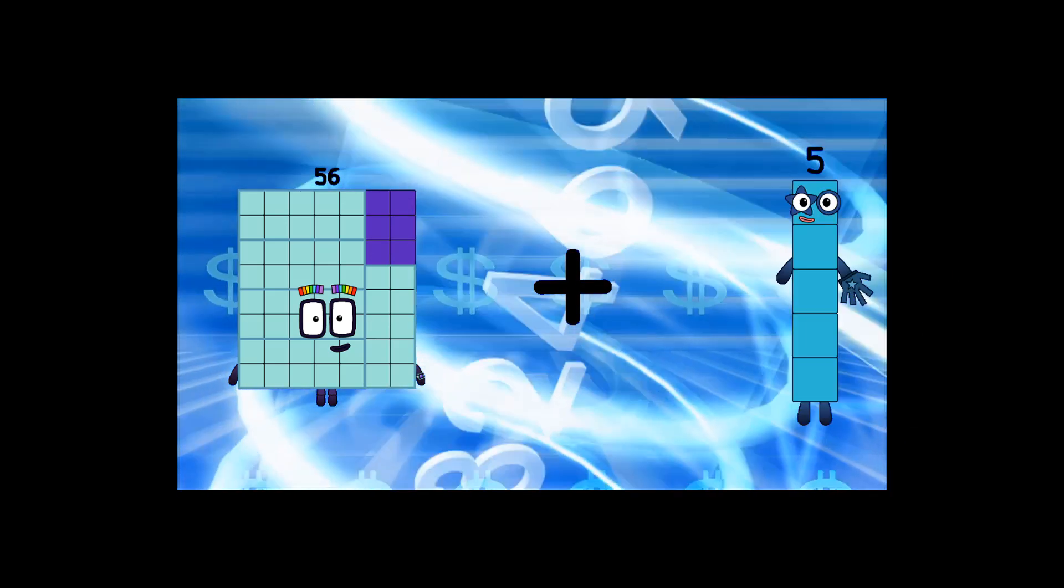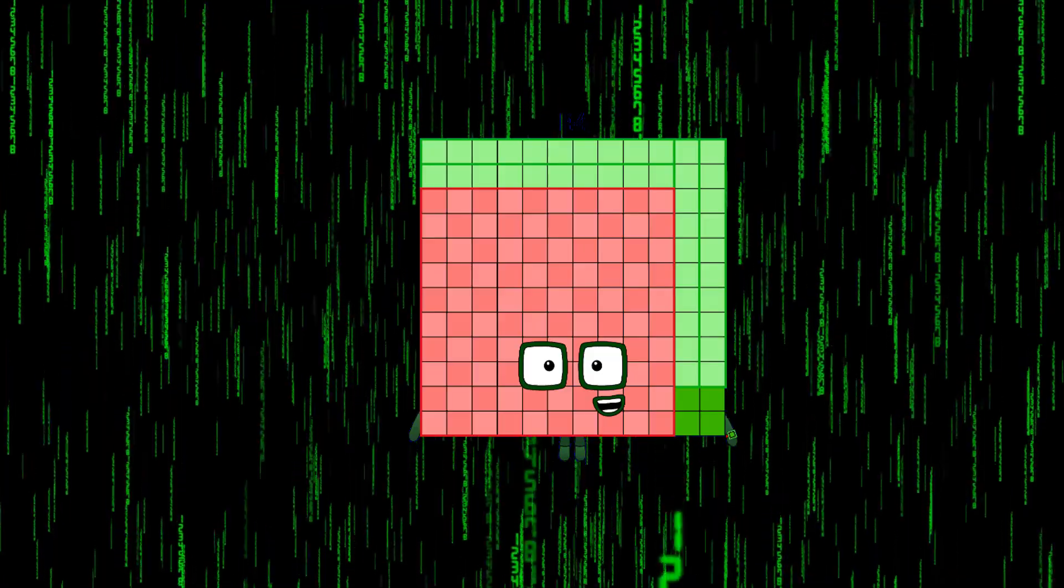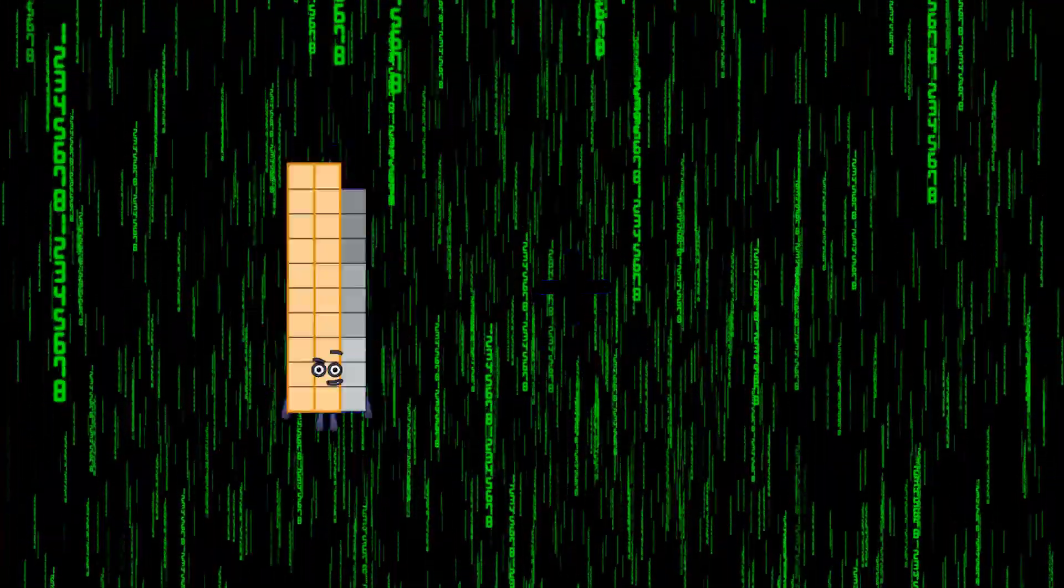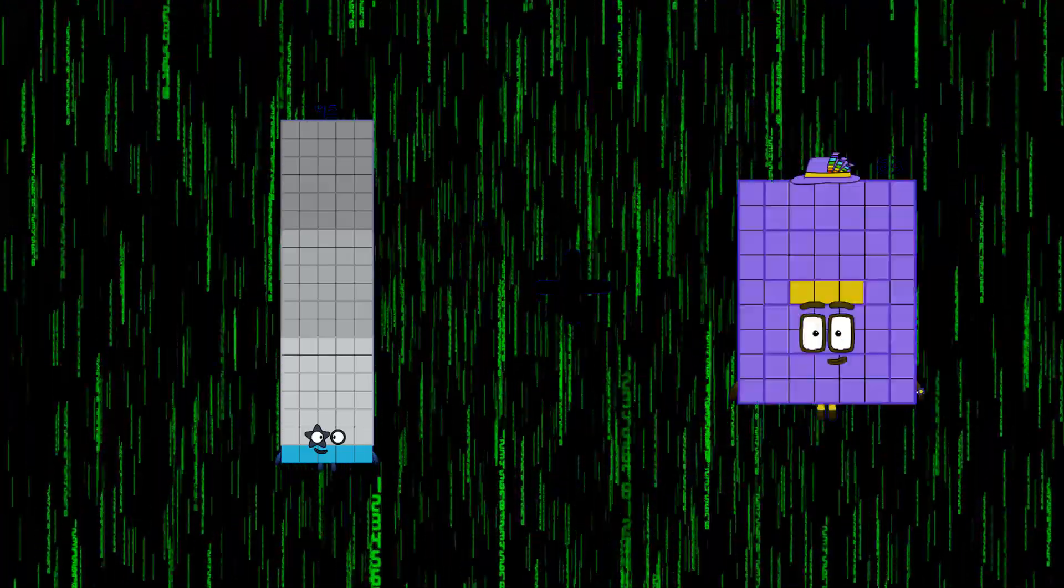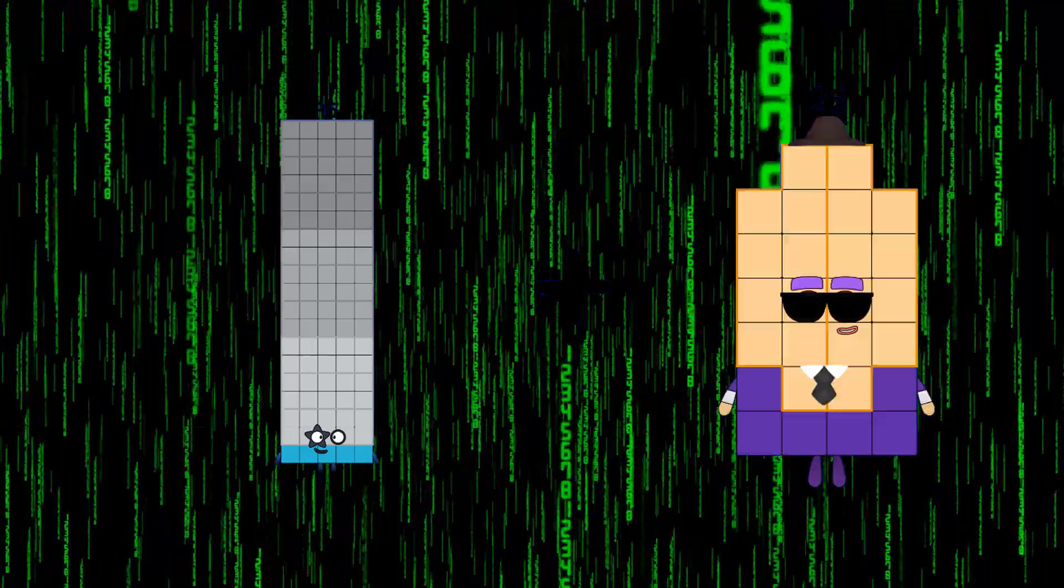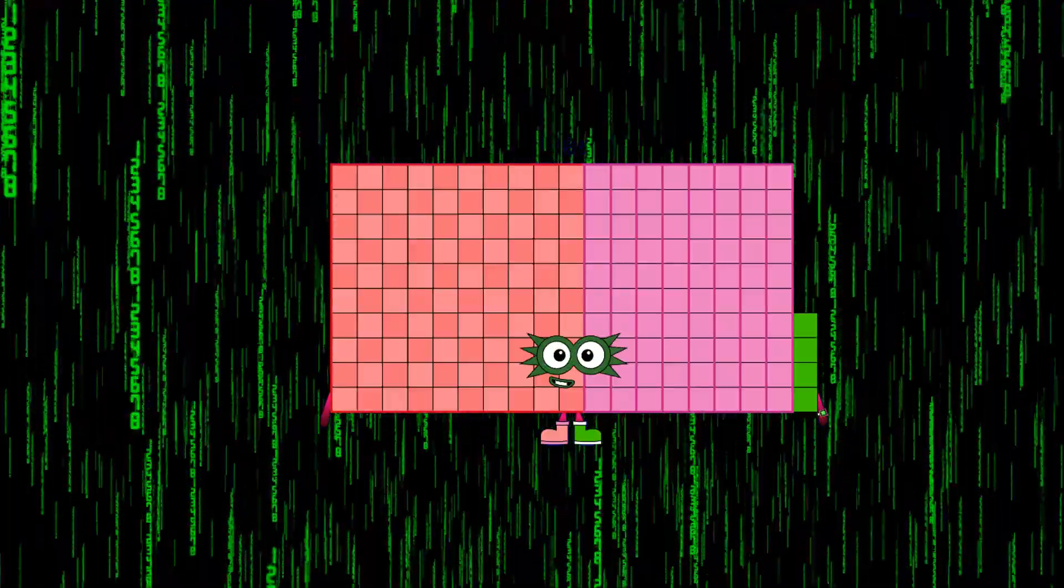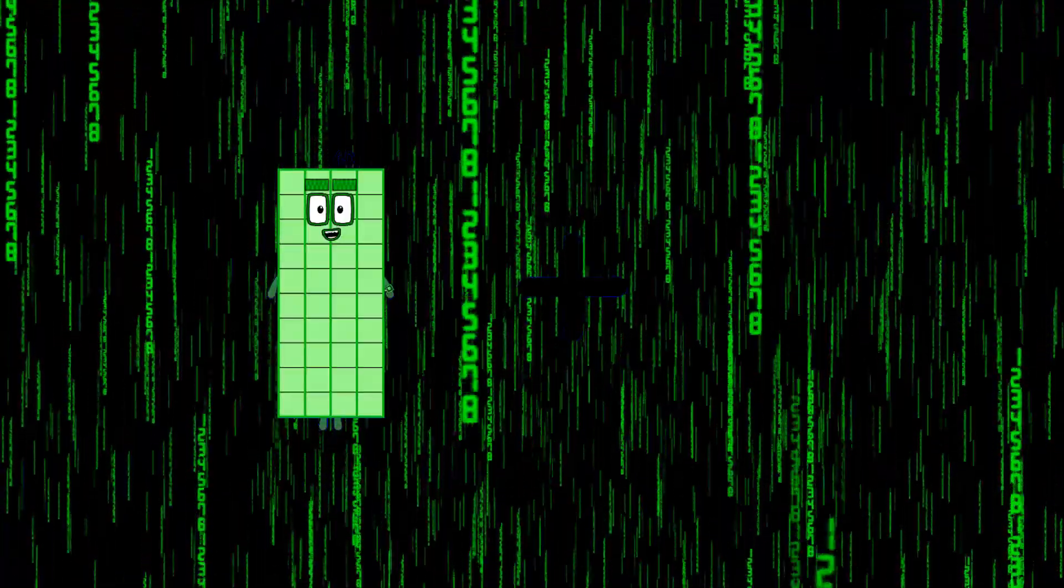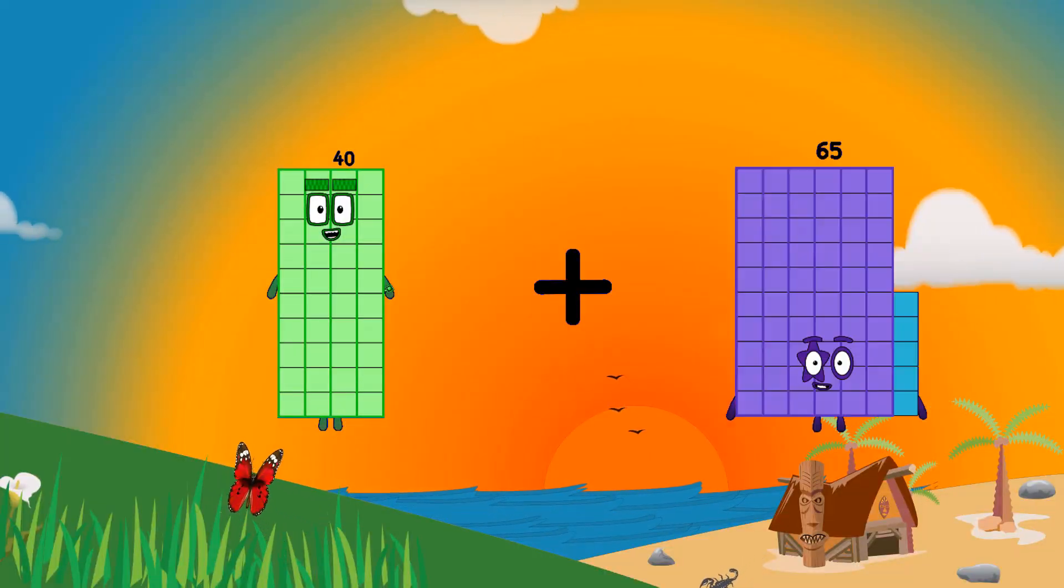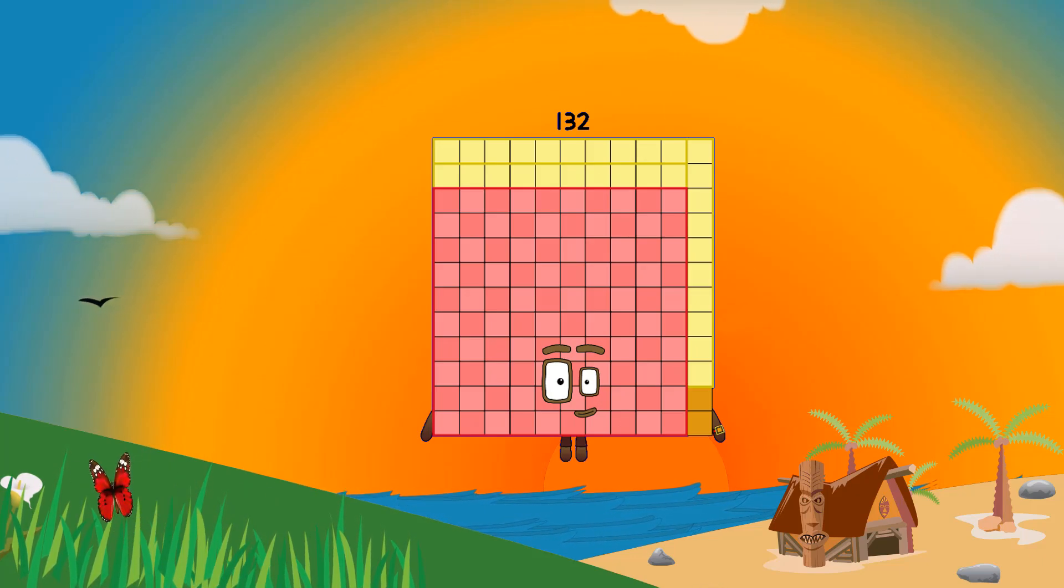Fifty-six plus eighty-eight equals one hundred forty-four. Ninety-five plus eighty-nine equals one hundred eighty-four. Forty plus ninety-two equals one hundred thirty-two.